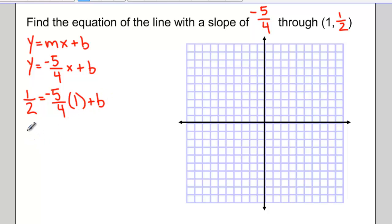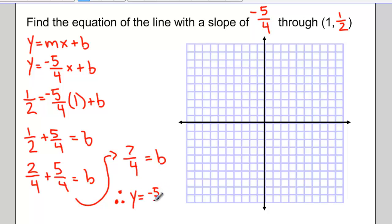And now that I've done that, I just need to manipulate and try and solve for b. You can do this fraction addition on your calculator, or you can do it the long way by finding a common denominator, which is 4. Changing the fraction of 1 half so that it matches with that common denominator. 2 quarters plus 5 quarters equals 7 quarters. And that's my y-intercept. So my equation would be y equals negative 5 quarters x plus 7 quarters.